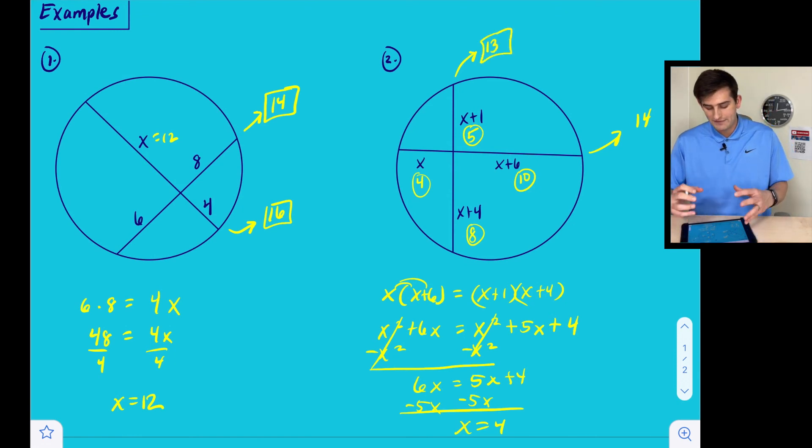All right, now if we look at the four, five, eight, and 10 that we just plugged in there, we can check our work. So if we do four times 10, that's 40, and five times eight, that is also 40. So we know we did it correctly. And that is the segments of chords theorem.